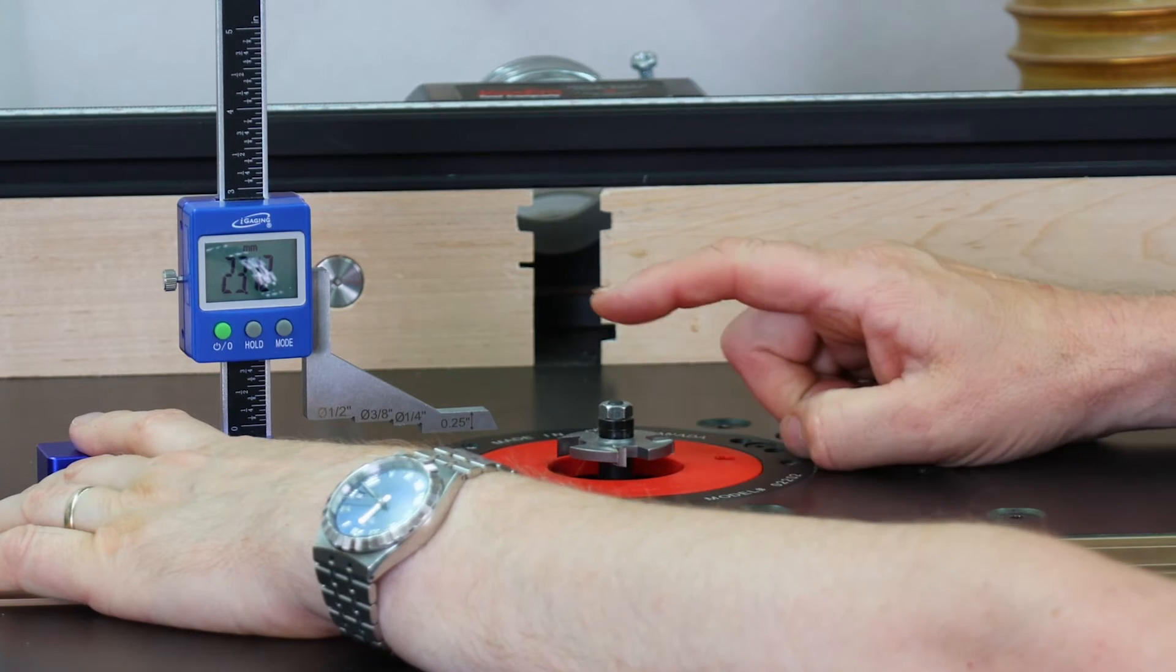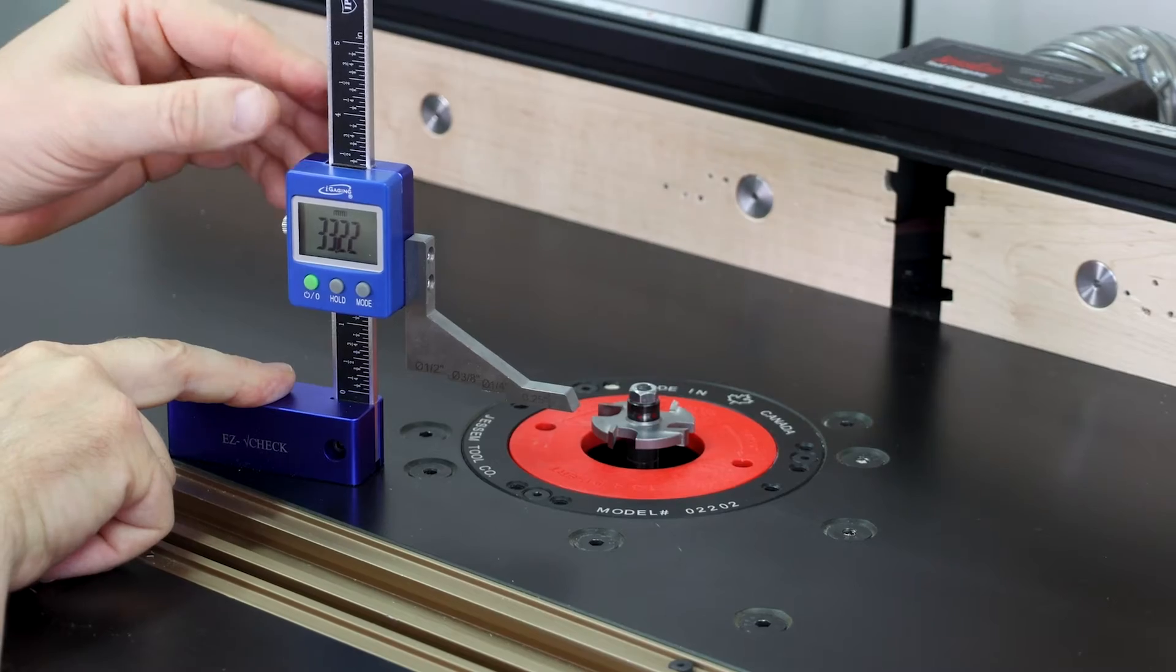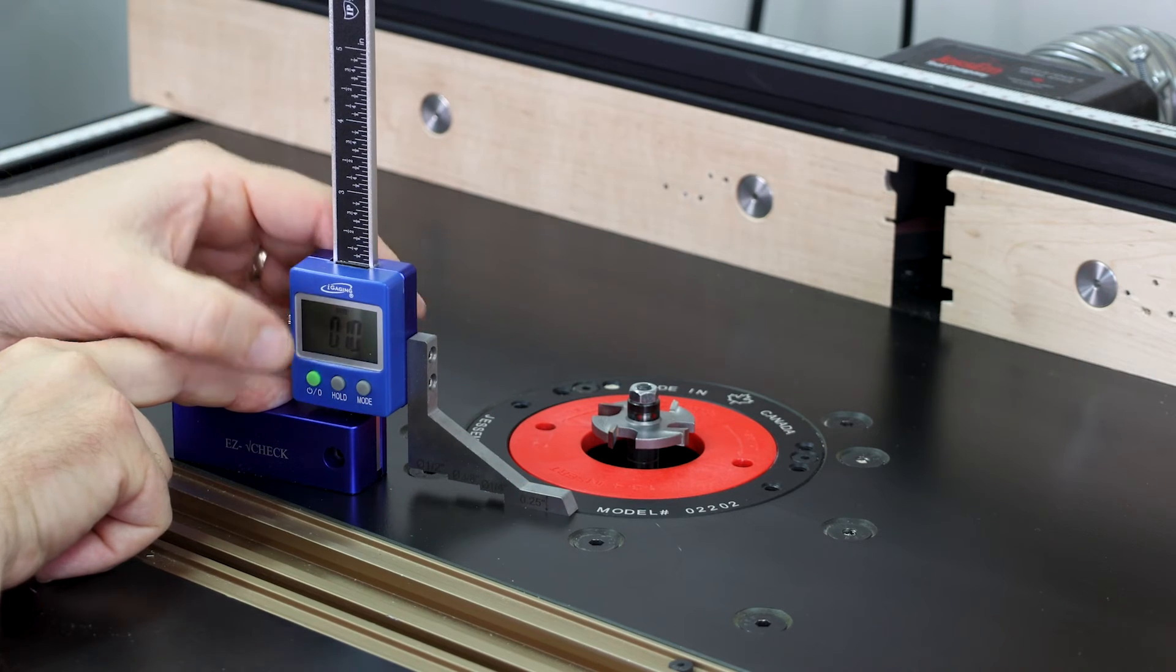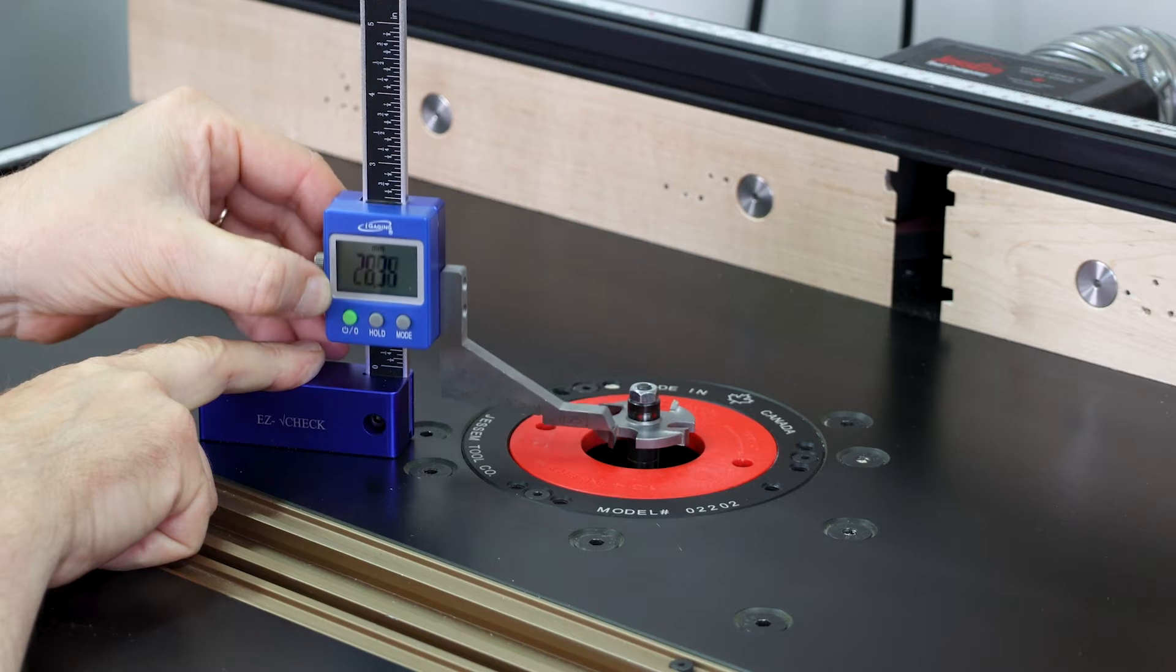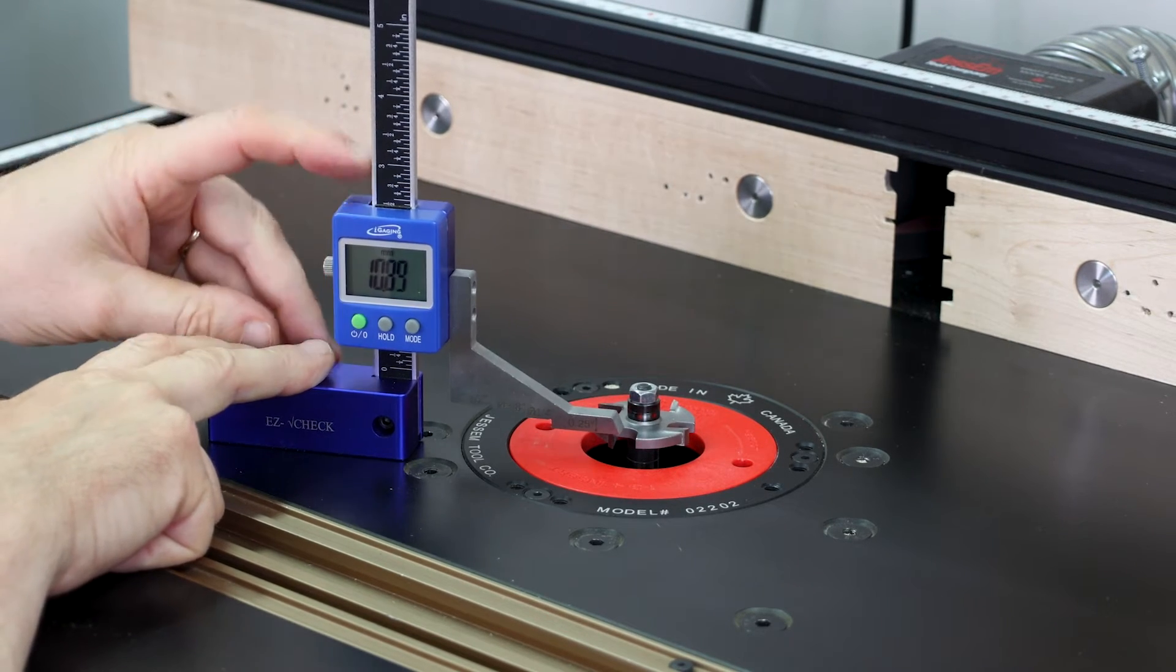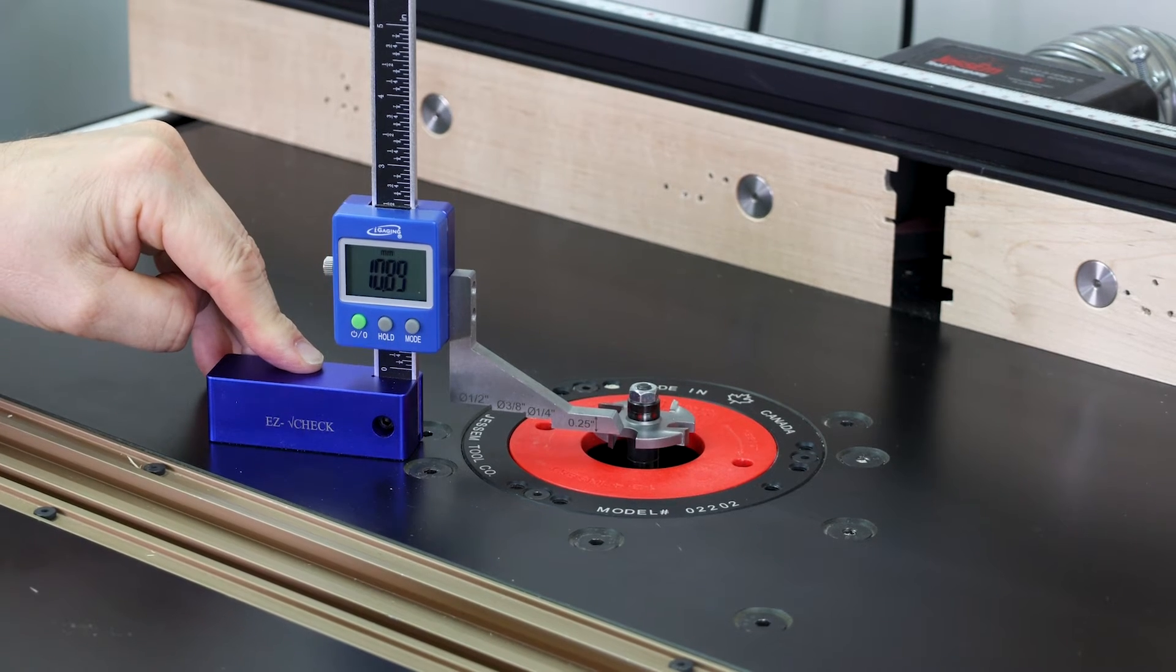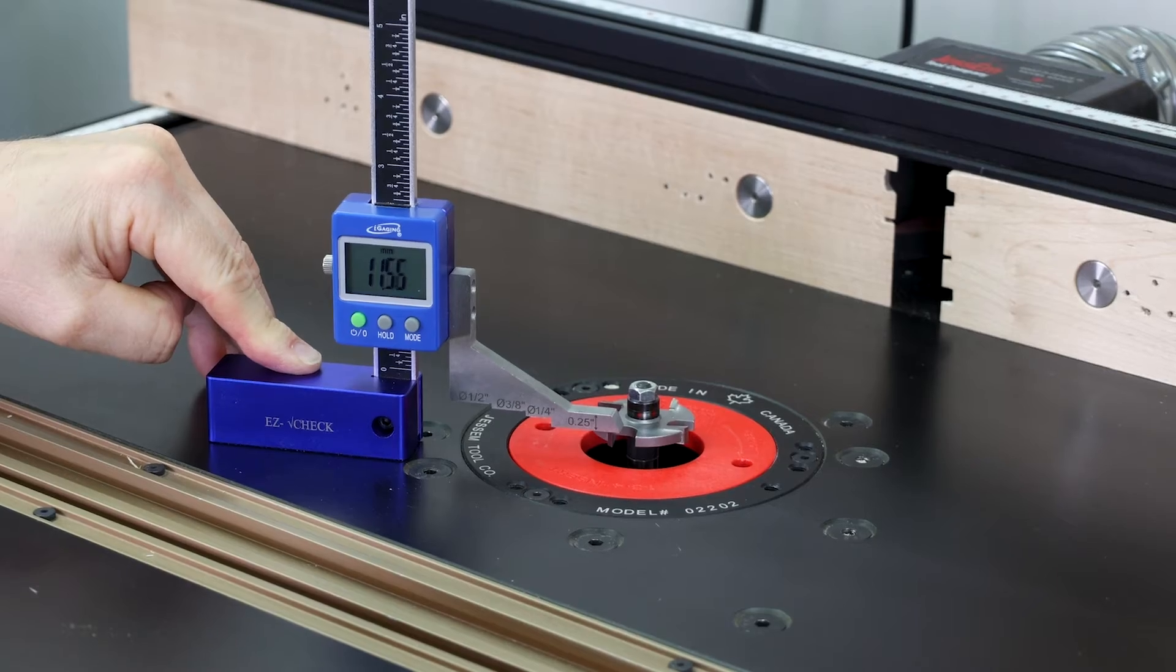If you want to get an accurate setting to the top of your router cutter, then what we would do, bring it down to your router bed and press it to zero. Pop it on top of the cutter, not the body. And then what you can do is wind it up to your desired height, whatever that might be.